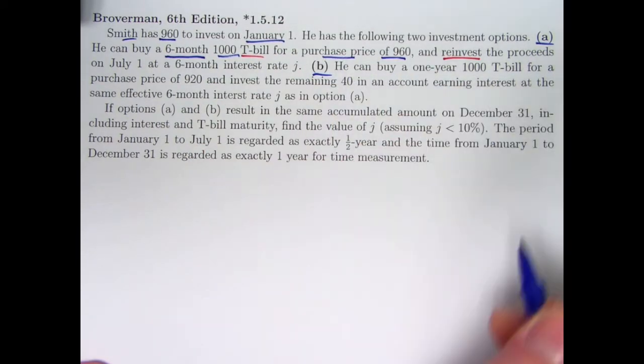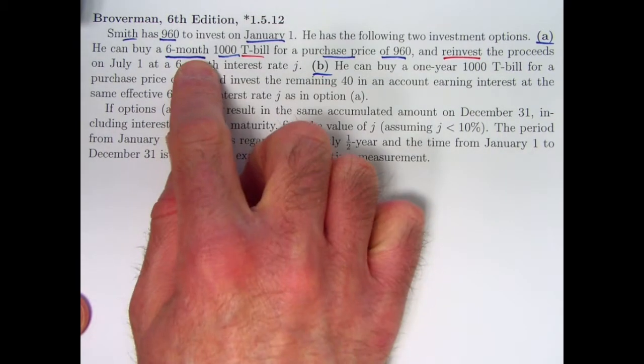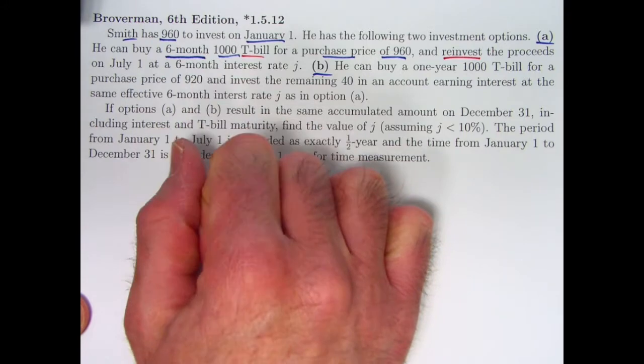The purchase price is less than a thousand: $960. So Smith is giving the government at the beginning of the year $960, and then at the end of six months when the T-bill comes to maturity, Smith is going to get a thousand.